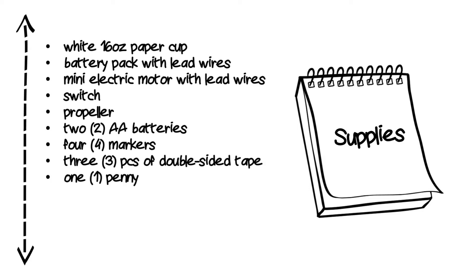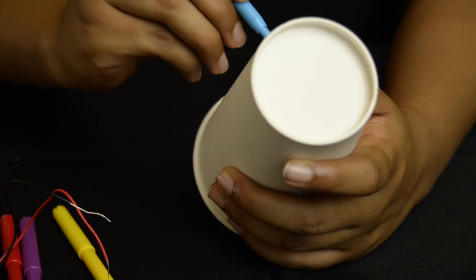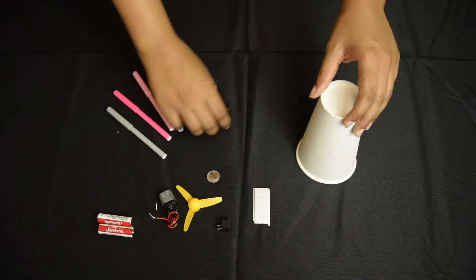Additionally you will need a large piece of paper or a poster board to demonstrate the project at the end. Step one: you're going to use the markers to get creative and decorate the cup. Remember the opening of the cup is the bottom of the bot.